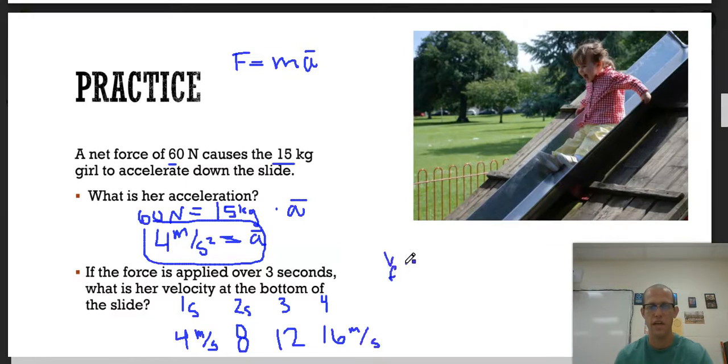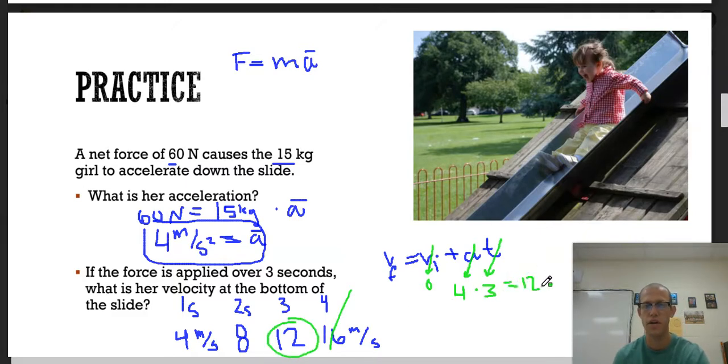If you wanted to use a kinematic equation, I would probably suggest this one. Our initial velocity is 0, our acceleration is 4, and our time is 3. I did one extra, it should be 12. So 4 times 3 is 12. So there you get out your final velocity just the same way.